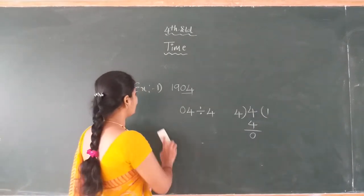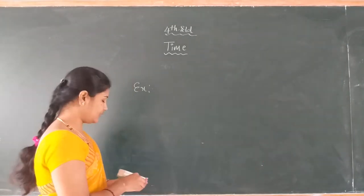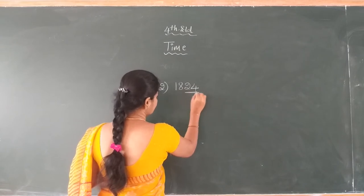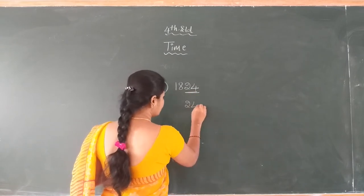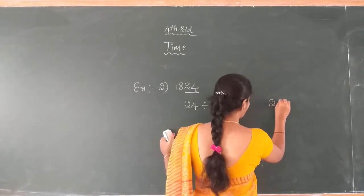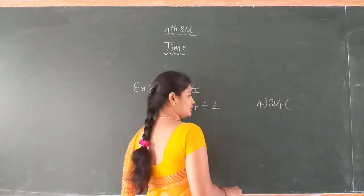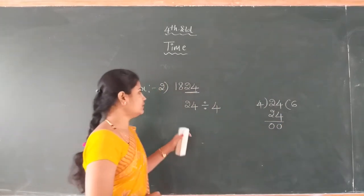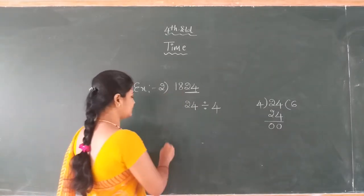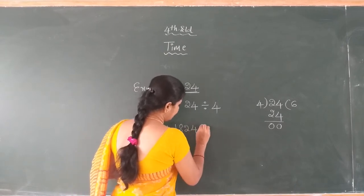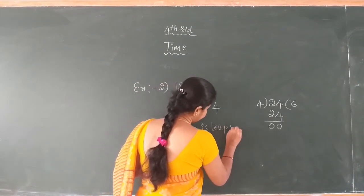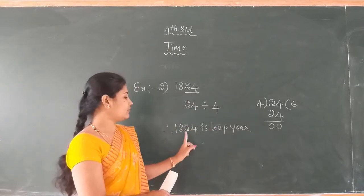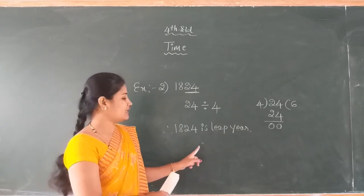So I give one more example for identification of a leap year. Example 2: 1824. You observe the last two digits. The last two digits 24 are completely divided by 4 — 24 divided by 4 equals 6. This is completely divided. Therefore, 1824 is a leap year, because the last two digits of the year are completely divided by 4.